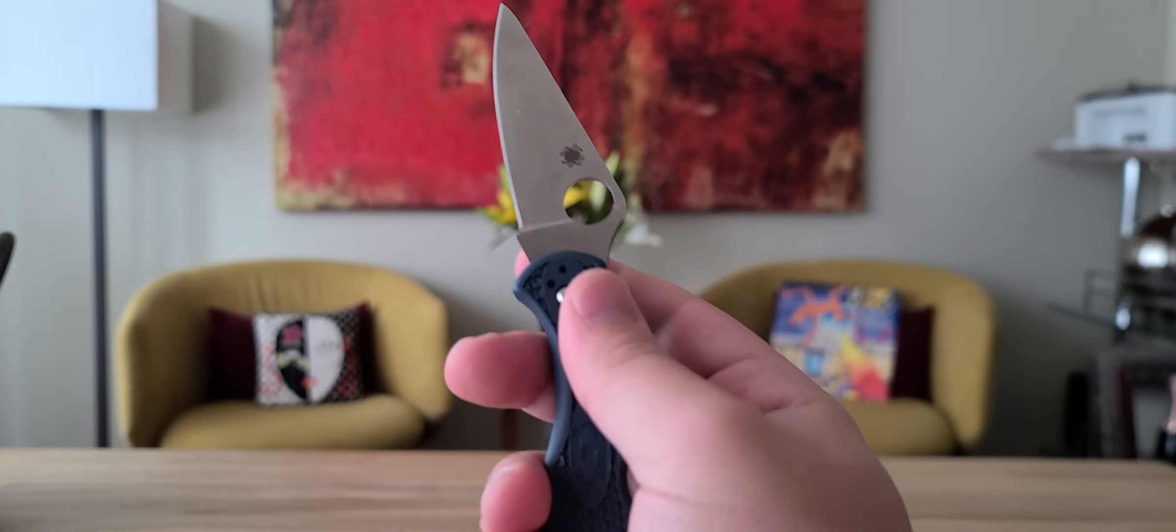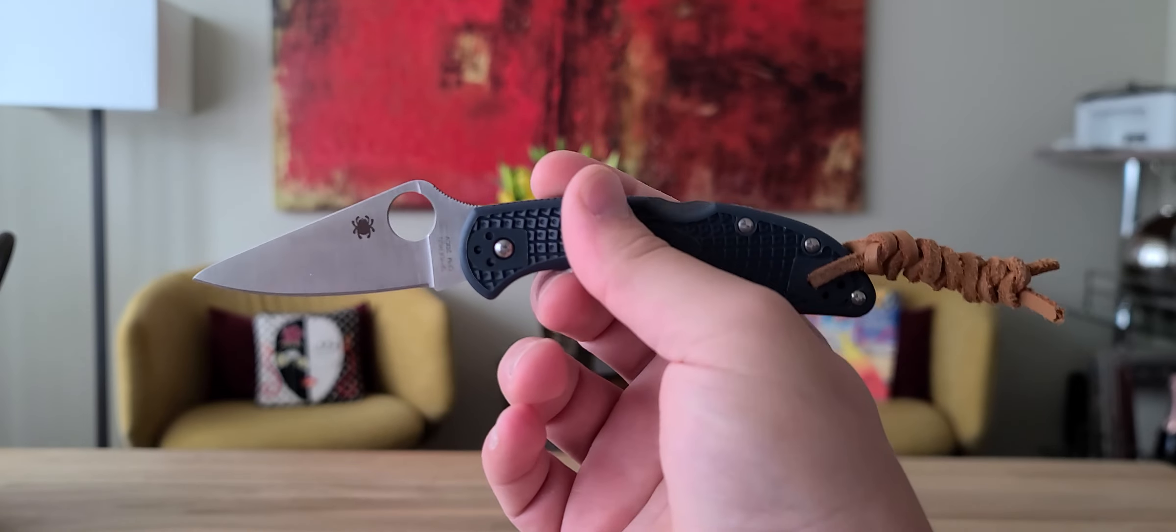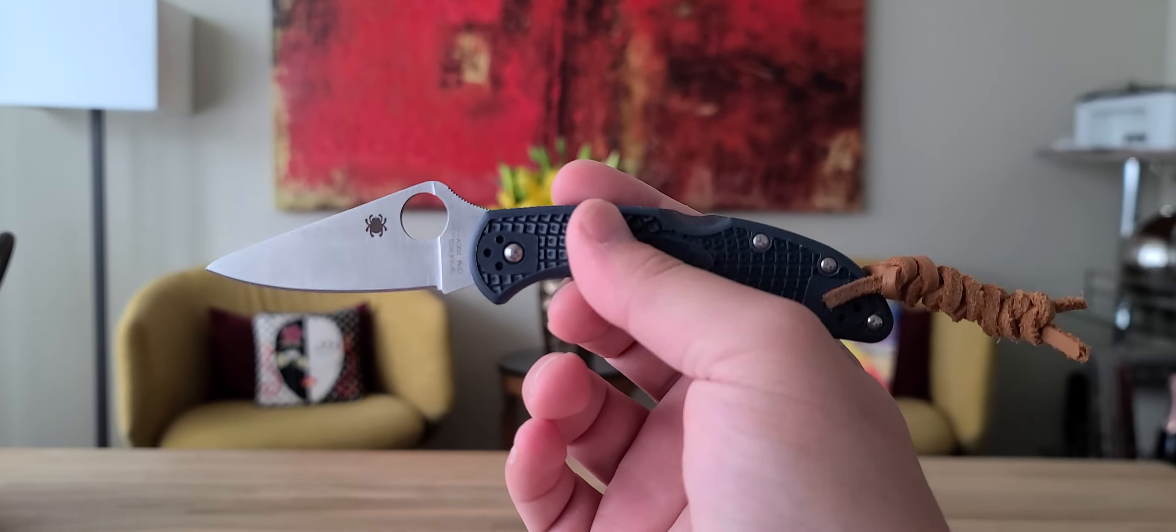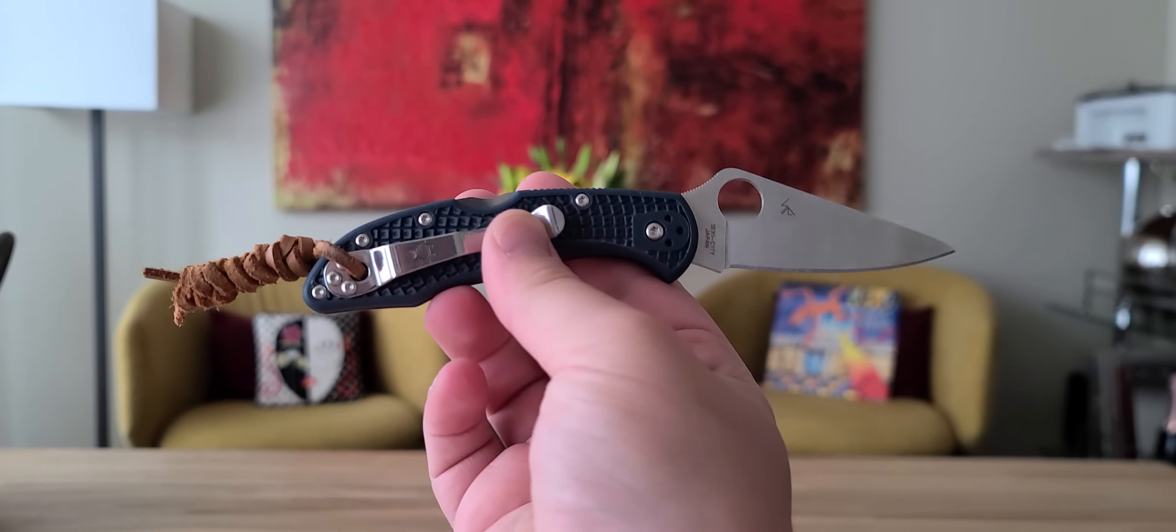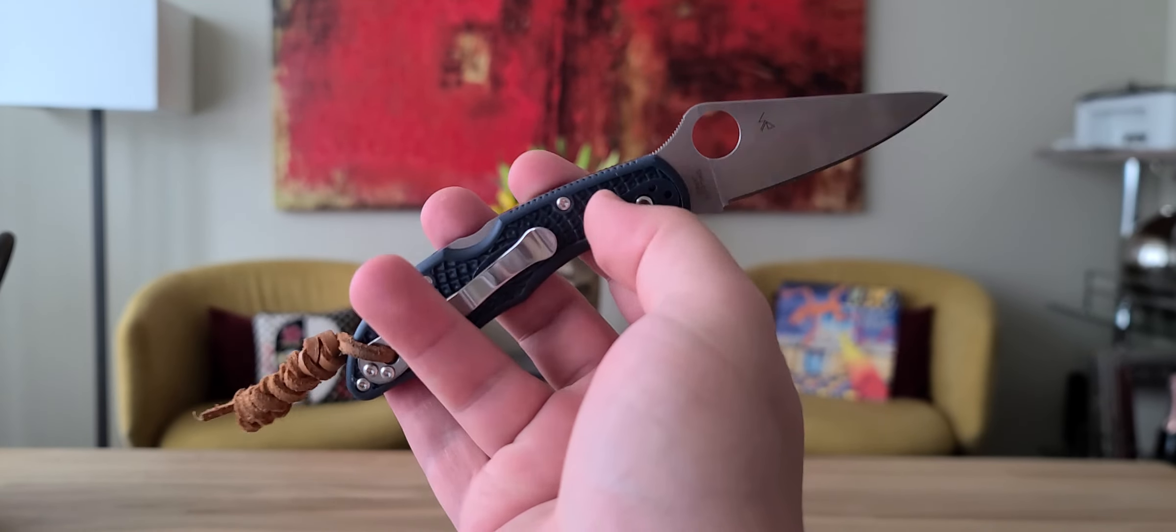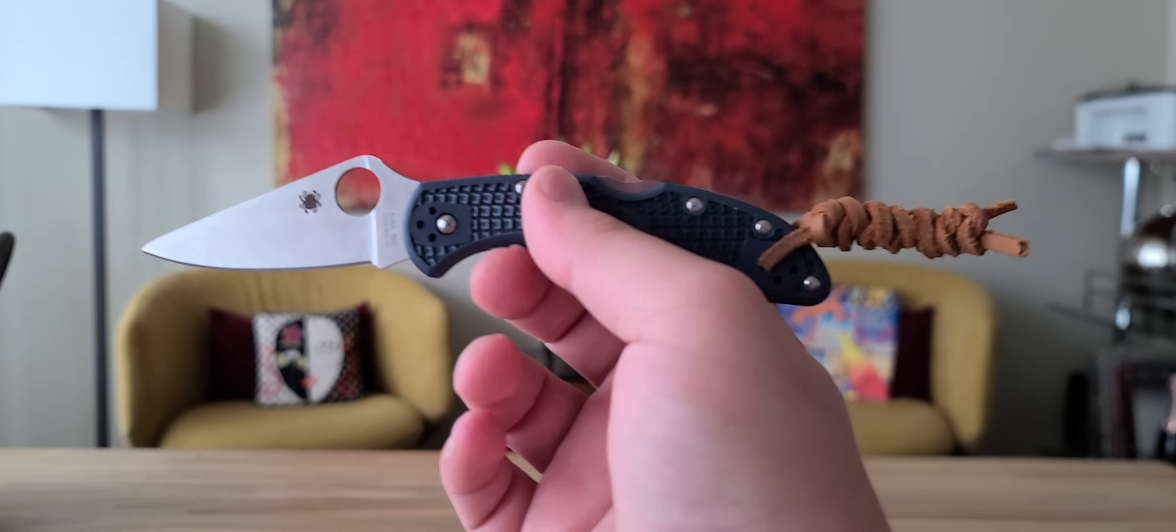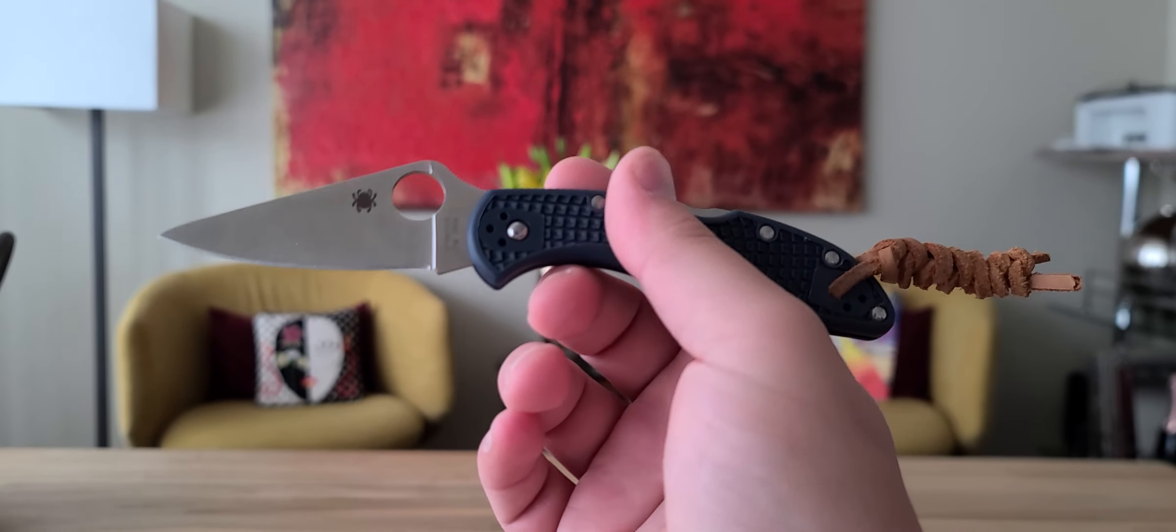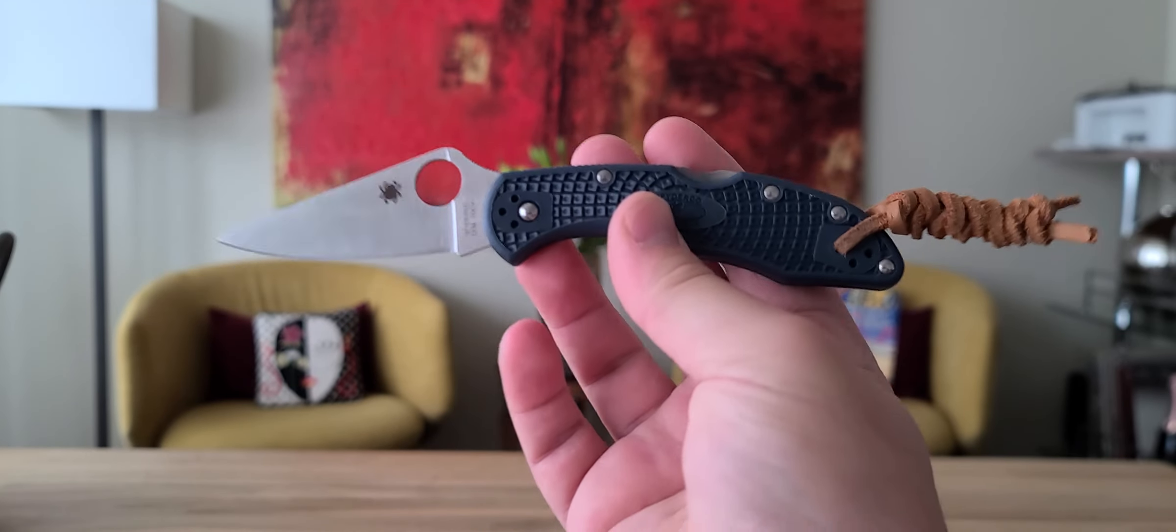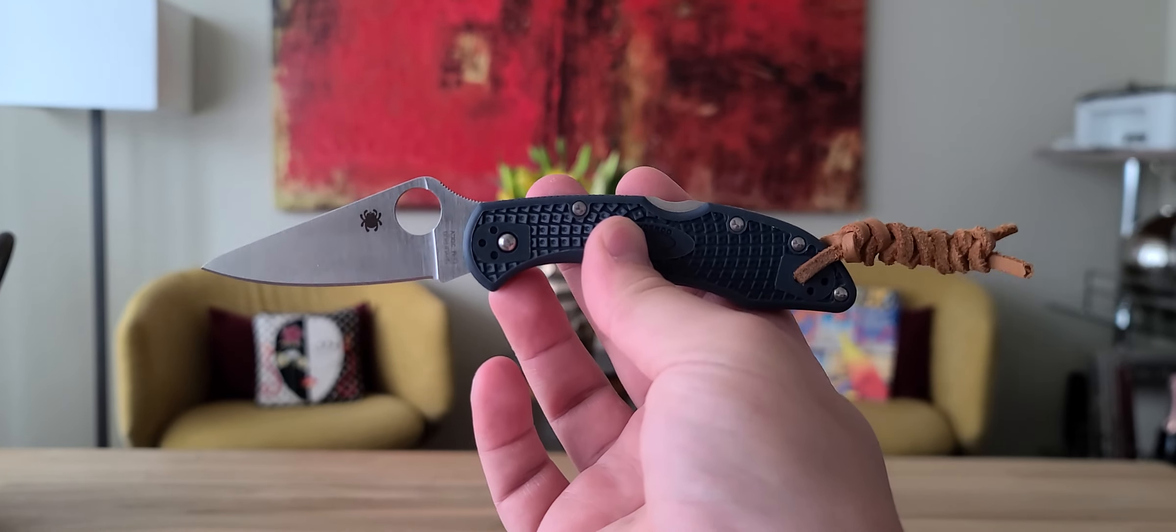By the way, this came from KnifeJoy. I believe they're the exclusive distributor of 20CV Delicas. They have a lot of really good Spyderco stuff at knifejoy.com. It's typically blue stuff, like the Slysz Bowie that I bought was also a kind of blue handle, and the Spydie Chefs and stuff. They just have a lot of blue-handled Spyderco stuff, mostly exclusive. This is definitely better than the VG10 Delica.